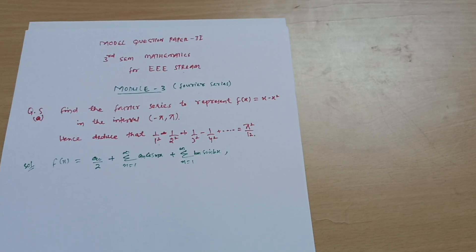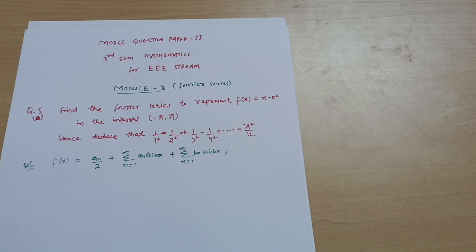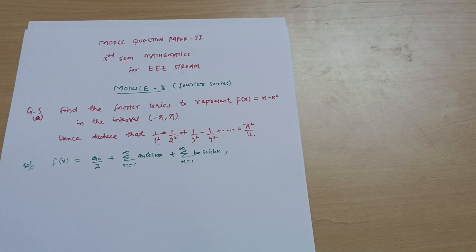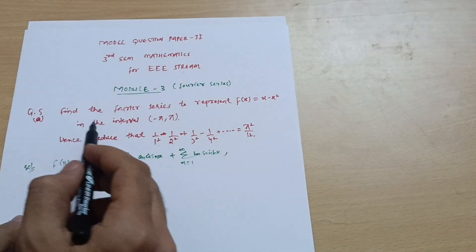Hello everyone and welcome back to my channel. Today I have a mathematics video for triple east team students. I have selected model question paper two and taken the question from the Fourier series, where most students skip this chapter because they think there is integration involved. But let me tell you, it is a very simple one — only simple integration using Bernoulli's rule of integration.